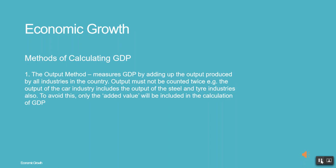Methods of calculating GDP. 1: The output method measures GDP by adding up the output produced by all industries in the country. Output must not be counted twice. For example, the output of the car industry includes the output of the steel and tire industries. To avoid this, only the added value will be included in the calculation of GDP.